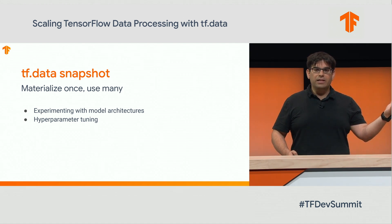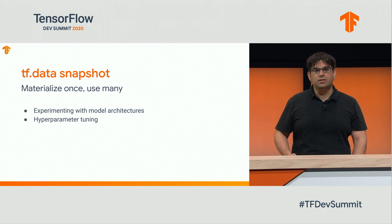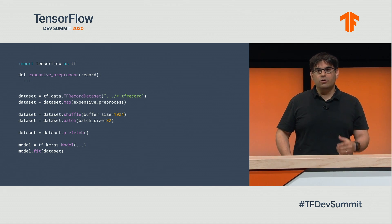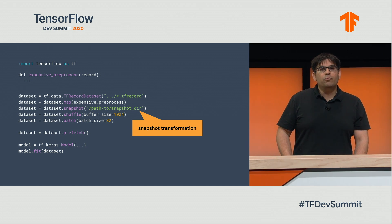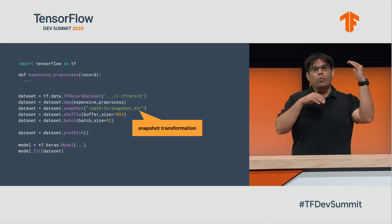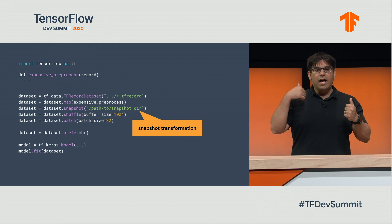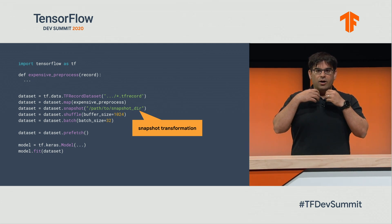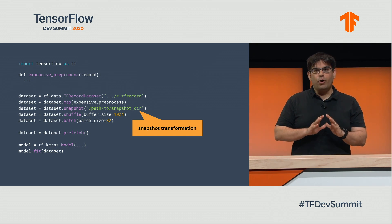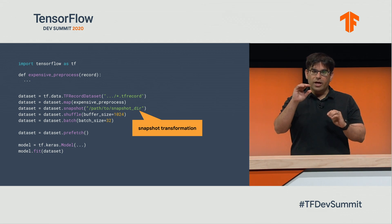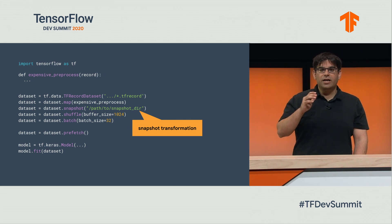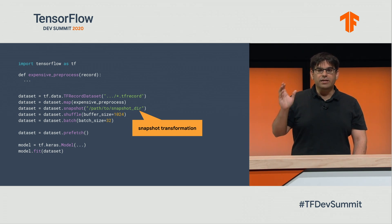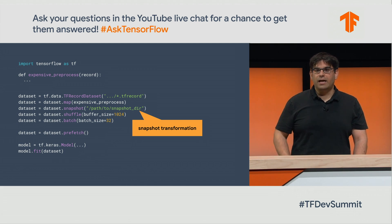Let's go through the pipeline and see how to add snapshot. You take the original pipeline and add a snapshot transformation right after the preprocessing step, providing a directory path. Everything before the snapshot will be written to disk the first time it runs, and every subsequent time we just read from it and continue through the rest of the steps. One important note: we place the snapshot before the shuffle step, because if it's after the shuffle, everything gets frozen — you lose the randomization and every subsequent run reads the same order again and again.